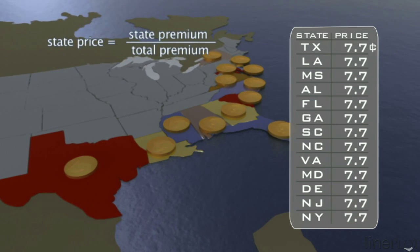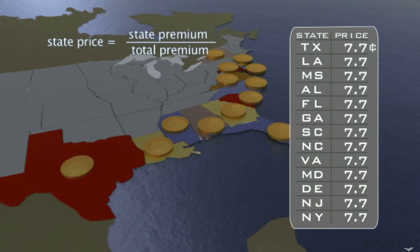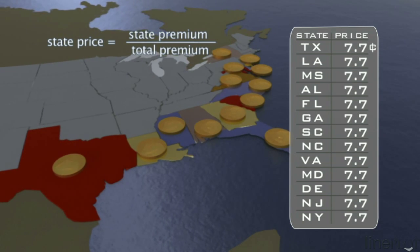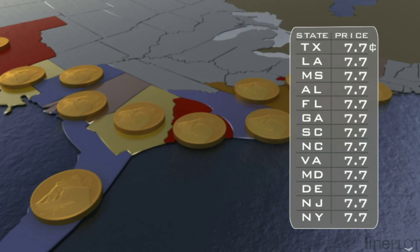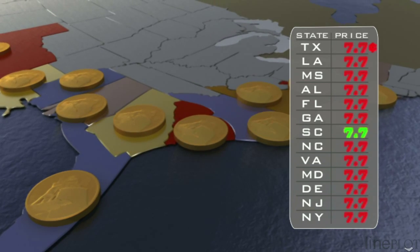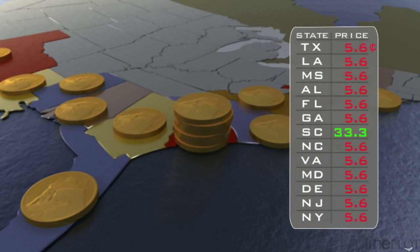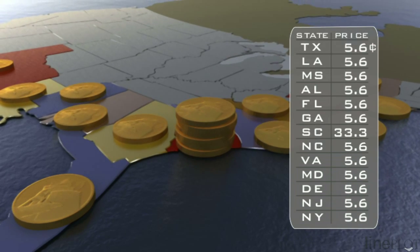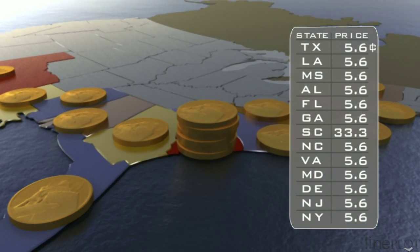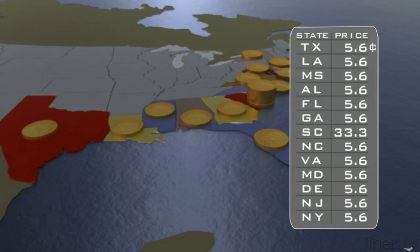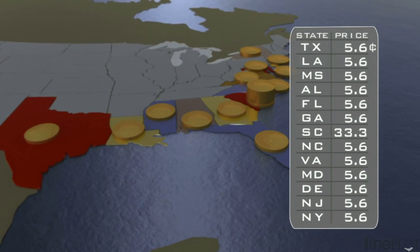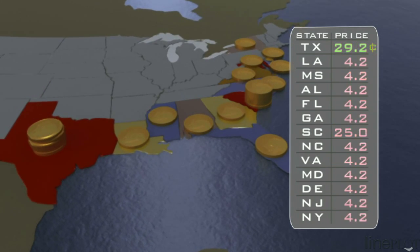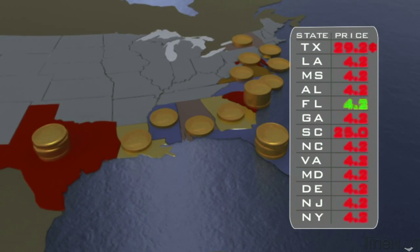The price for a contract on a particular state is the amount of money on that state divided by the total amount of money on all states. An insurance company buys $5,000 of coverage on South Carolina. This increases the price of each South Carolina contract and decreases the price of all the other state contracts. Notice that as contracts on other states are purchased, the contract price for South Carolina is updated. Prices for all contracts will continue to change until the auction is over.